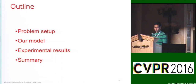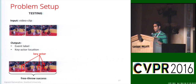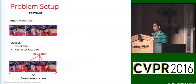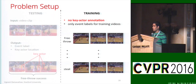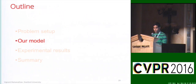Let me restate the problem to make things clear. During testing, we are given a video clip and we want to identify the event label — like what shot is happening in the basketball game — as well as localize the key actor responsible for that event. The catch is that during training, we only have event labels and do not have annotations for the key actor. No key actor annotations during training, but we still want to localize the key actor during test time.